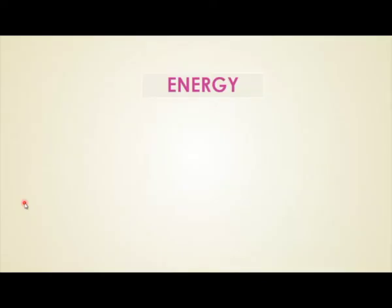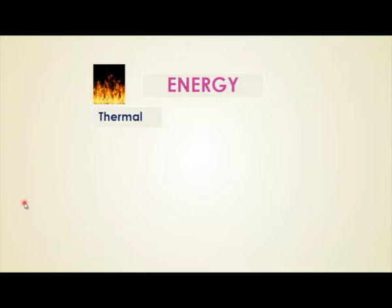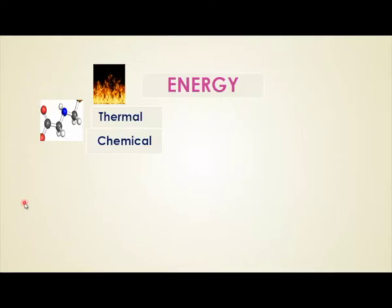Energy is required to get transferred from one state to another state. The first type is thermal energy. Thermal energy is due to the movement of atoms in molecules, and the fast movement of atoms leads to heat and produces fire — that energy is called thermal energy. Inside molecules, we have bonding between atoms. These bonds produce chemical energy, which is present in all forms of substances — for example, in food, in wood, and in all existing structures.